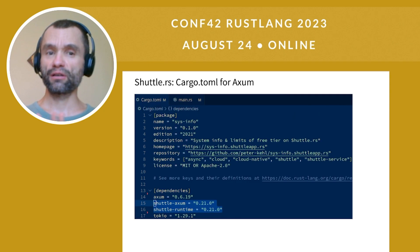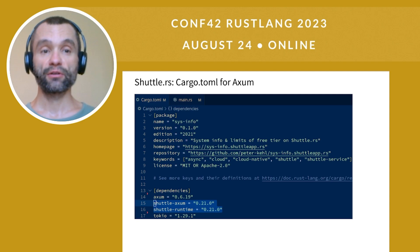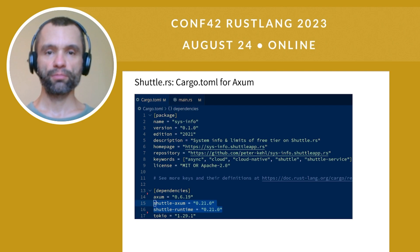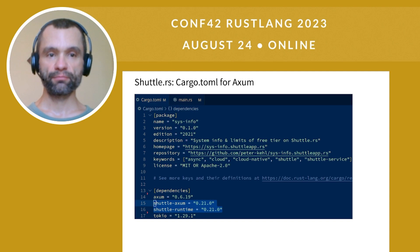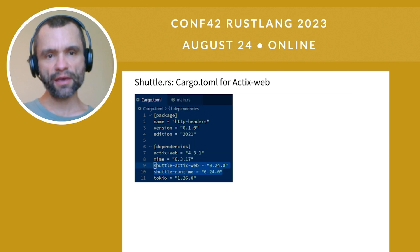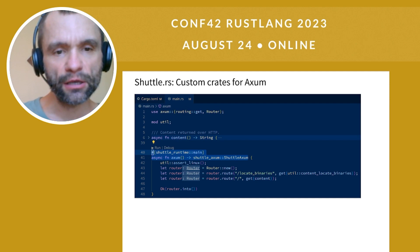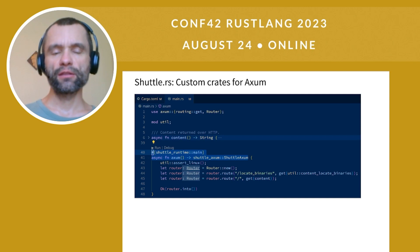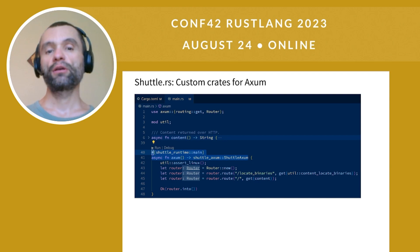In Shuttle.rs, there is no mandatory configuration file. There is a file called shuttle.toml, but all it does for now is let you specify the application name — though that's optional, and you can specify it in the CLI when you deploy the application anyway. Integration with Shuttle is done through custom crates provided by Shuttle. For example, this is a cargo.toml for a web app that uses Axum, and Shuttle provides two Axum crates: shuttle-axum and shuttle-runtime.